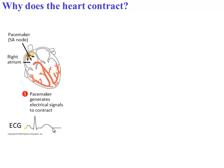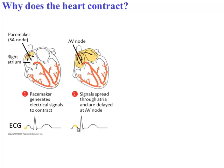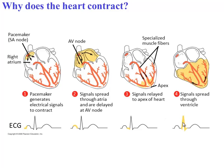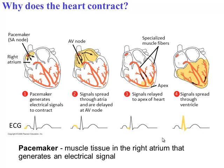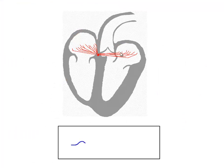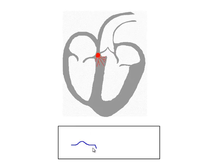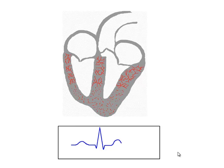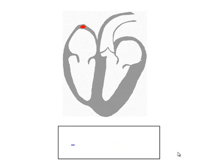When you look at an ECG reading, the first part represents the signals starting to spread. The next part represents the signals spreading through both atria. Then there's a little delay as the signals spread to the bottom of the heart. The large spike in the ECG is when the signal spreads through all of the ventricles — so the small hump is the atria, the big spike is the ventricles, and then the heart returns to normal. An animation shows the pacemaker generating signals in the atria, spreading into the ventricles, followed by a recovery period before it begins again.